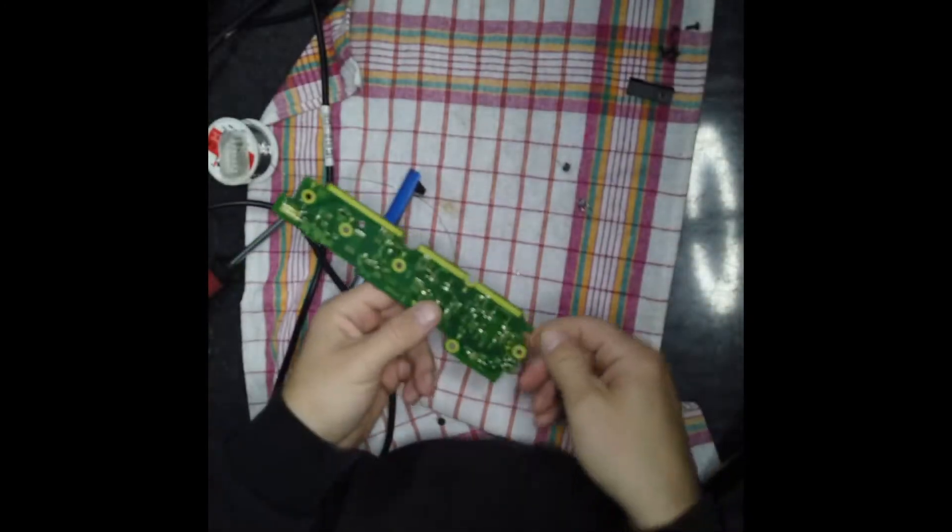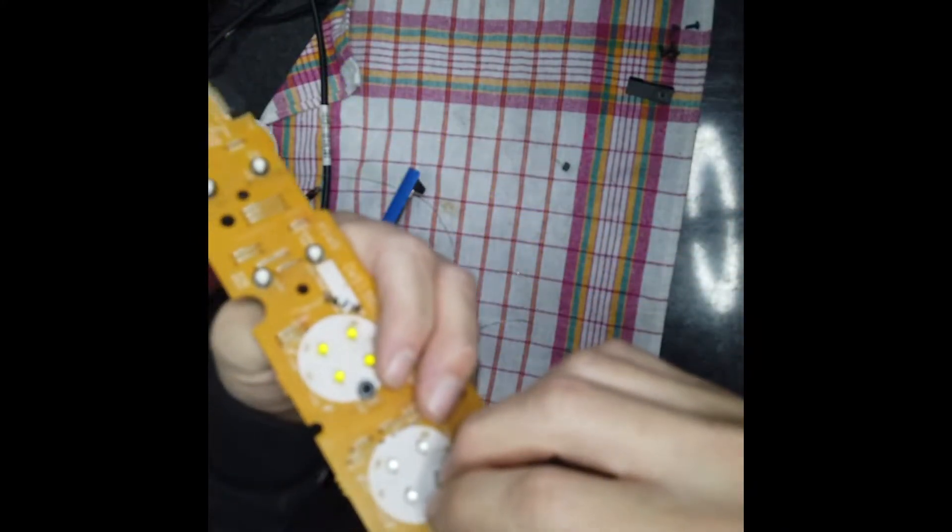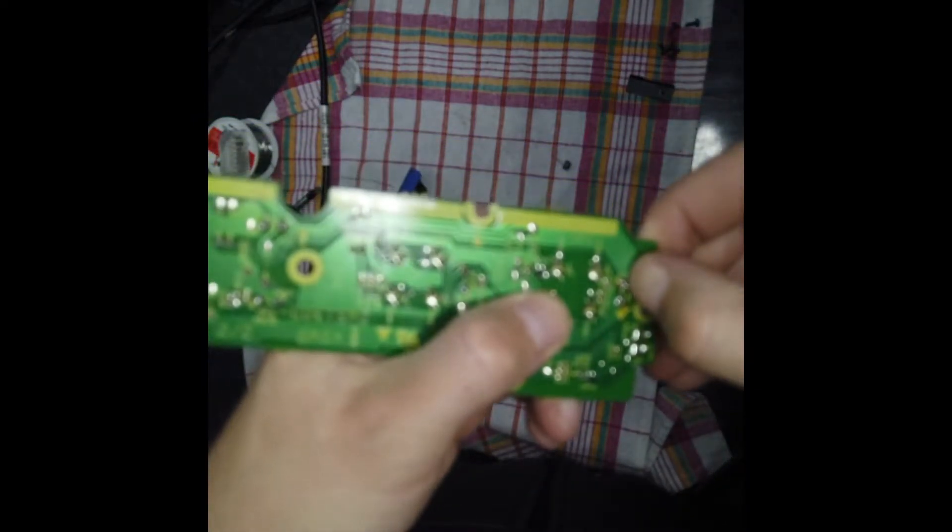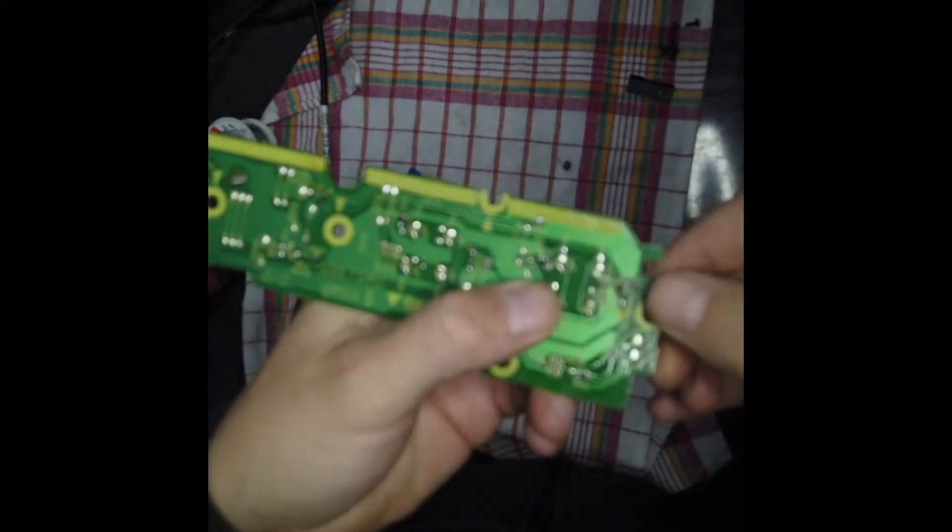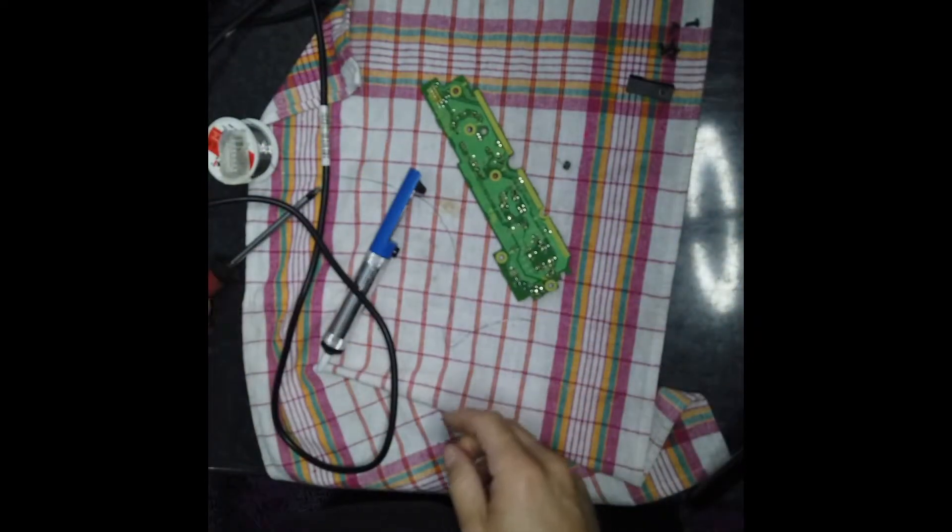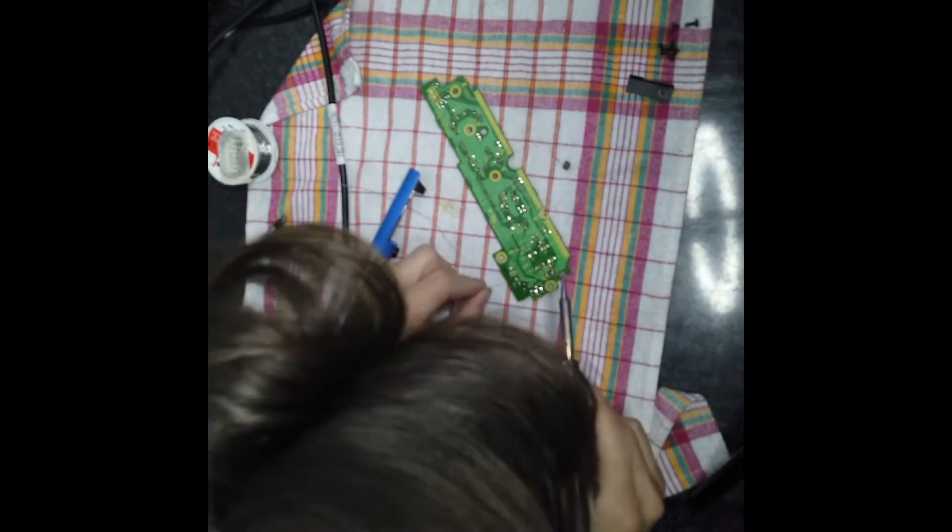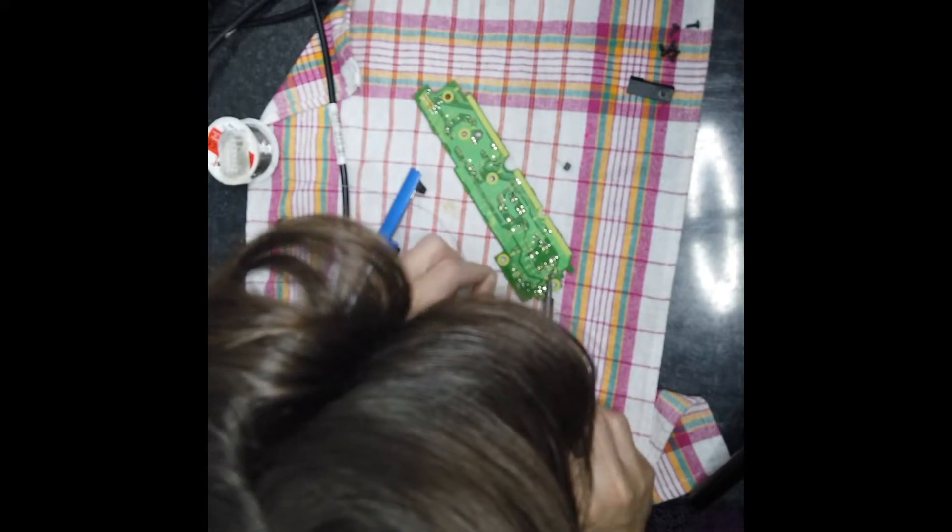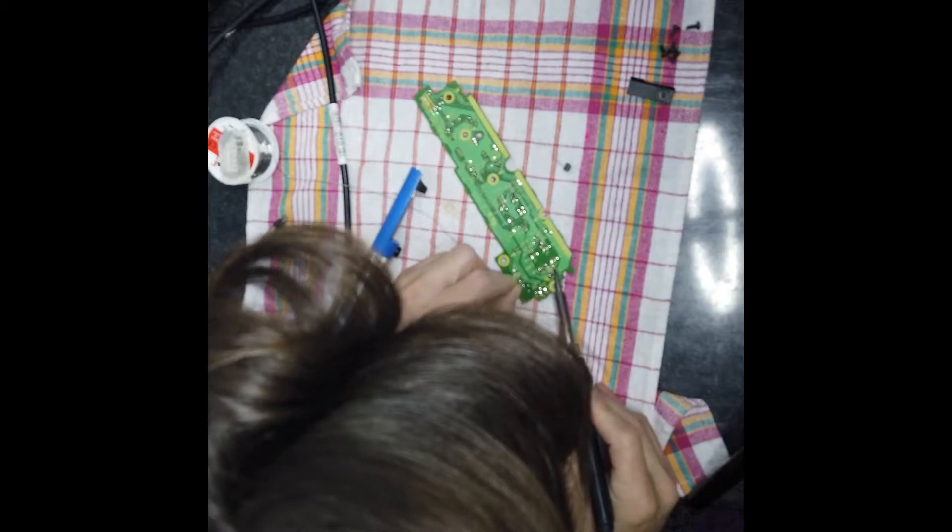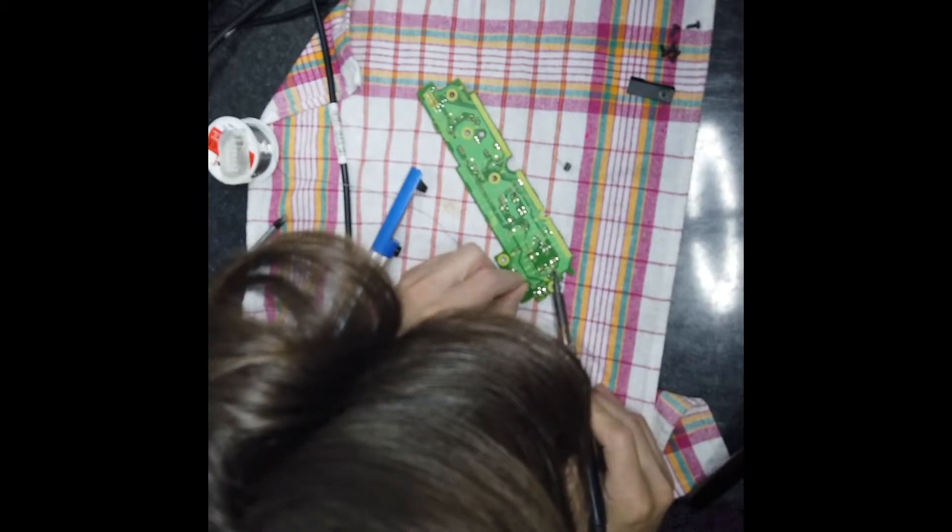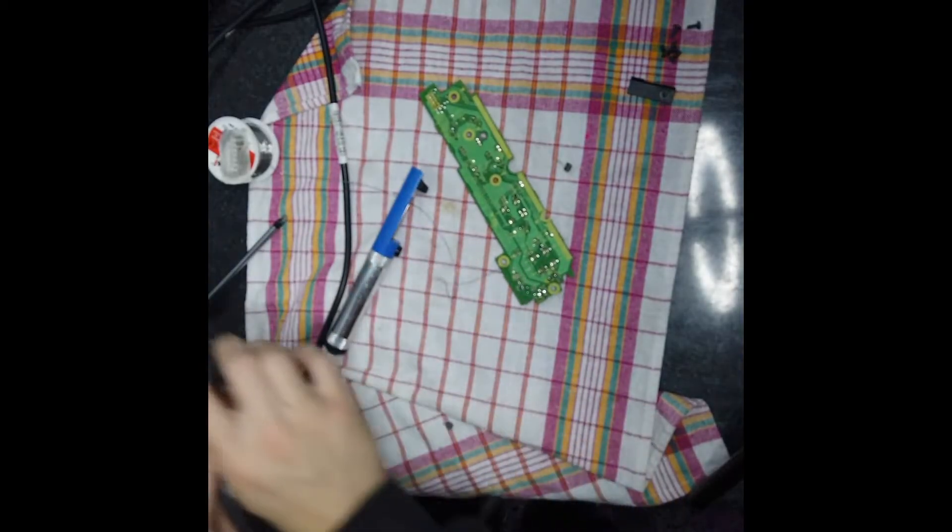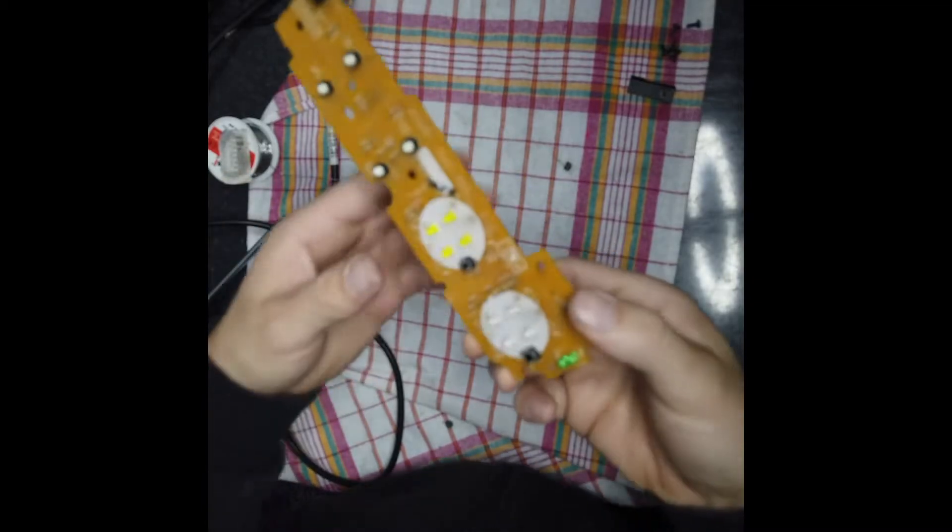I don't know if you can see from the video. Place a new button, fold it down so it sticks correctly, and then add the solder again. Now we will replace the other one.